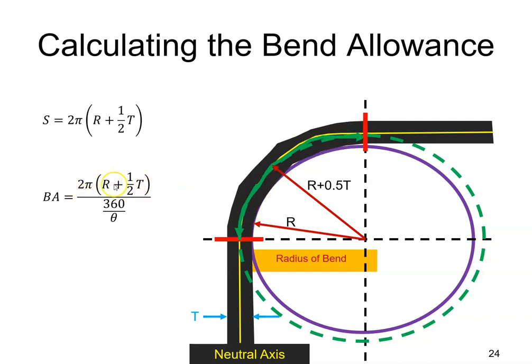whatever the bend angle is into 360 degrees. In our case, the bend angle is 90 degrees. So, 90 goes into 360 four times. It's a quarter of the circumference of this circle. That's our equation using the two pi method for the bend allowance.